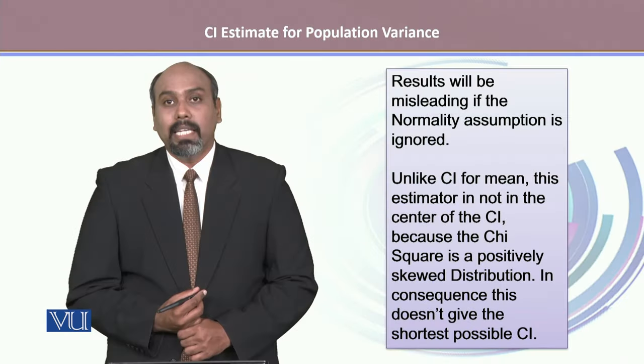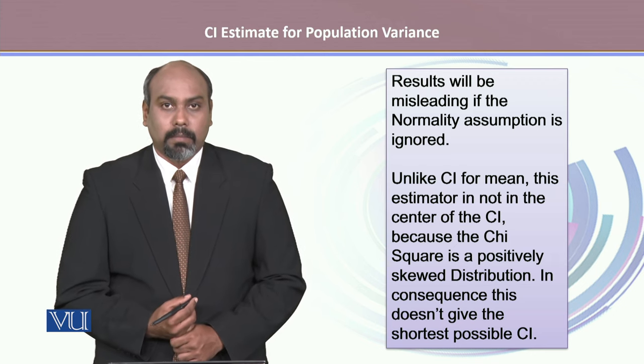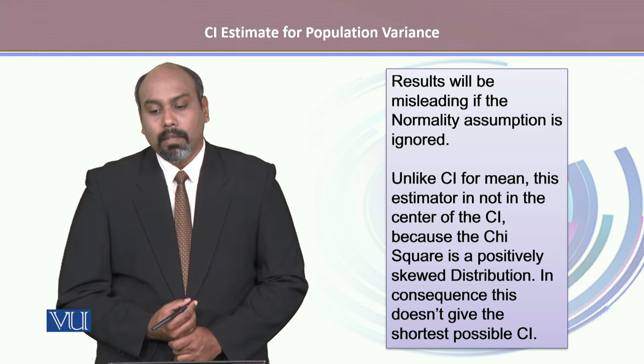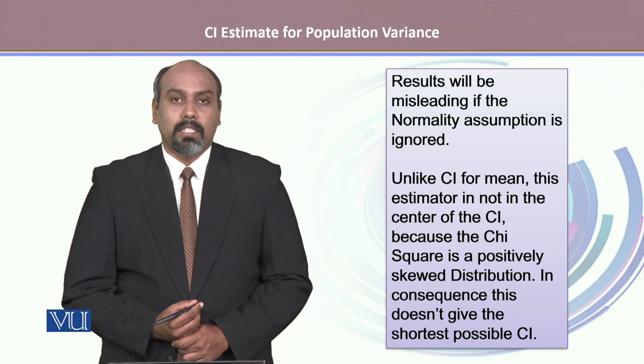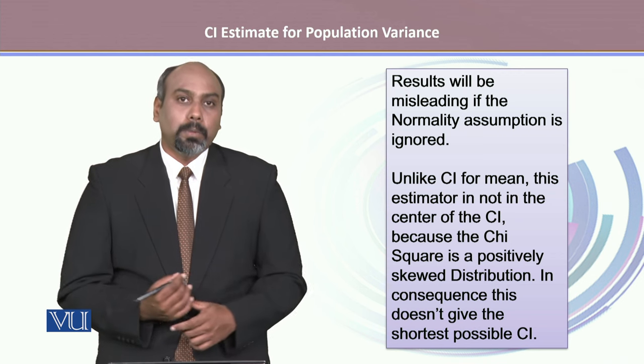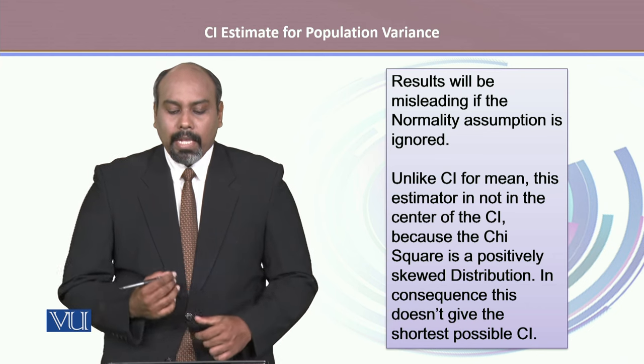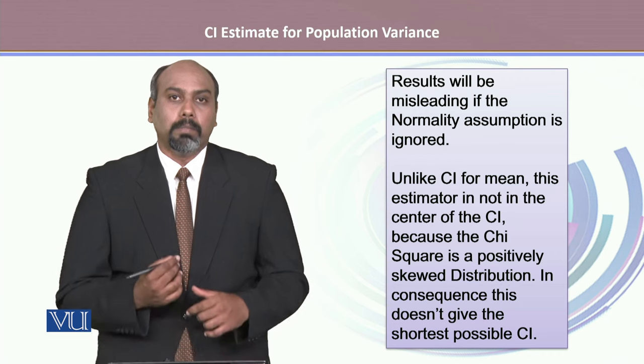Results will be misleading if the normality assumption is not met. Moreover, unlike confidence intervals for the mean, this estimator is not in the center of the confidence interval because the chi-square distribution is a positively skewed distribution. In consequence, this does not give the shortest possible confidence interval.